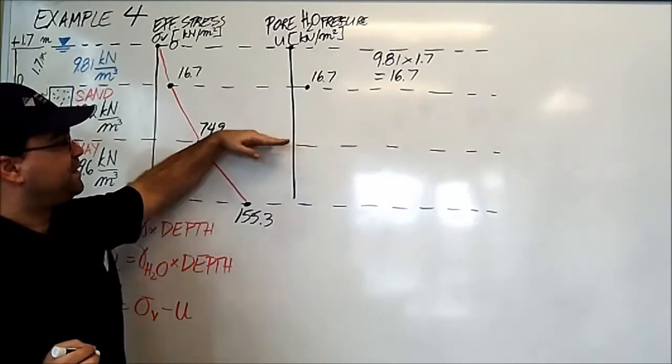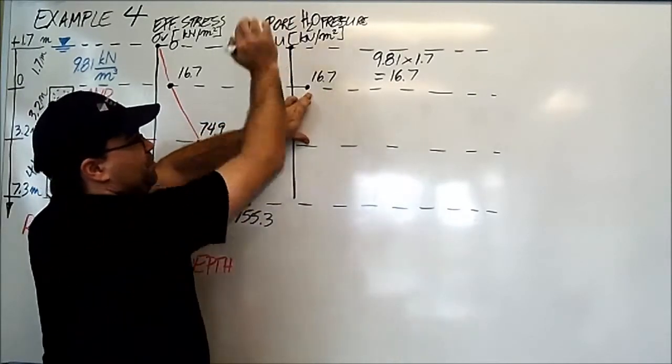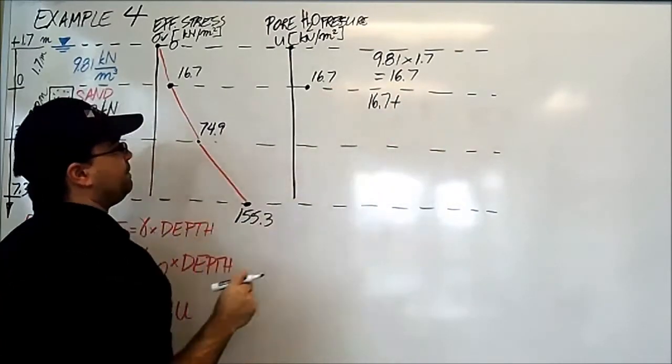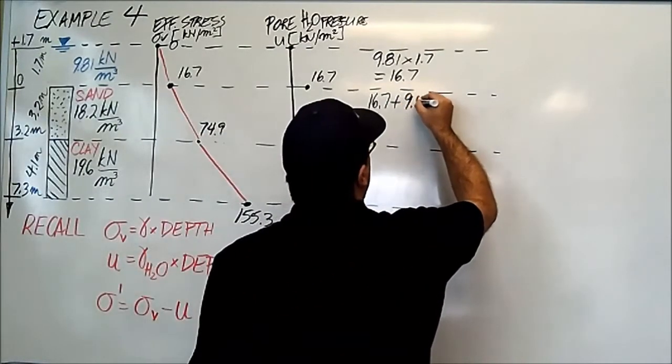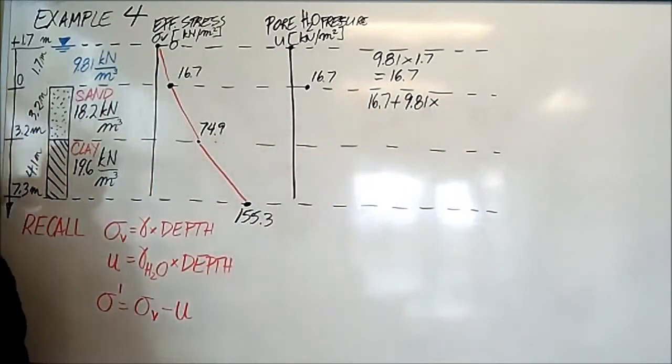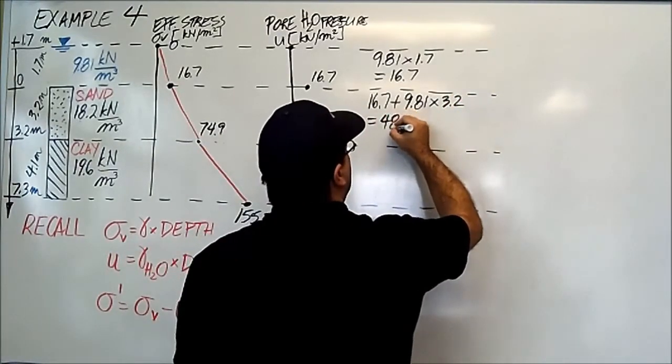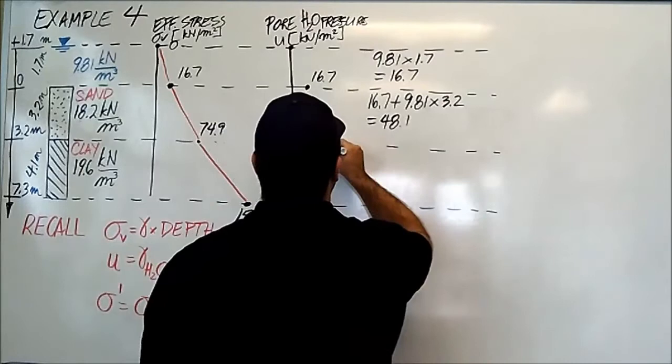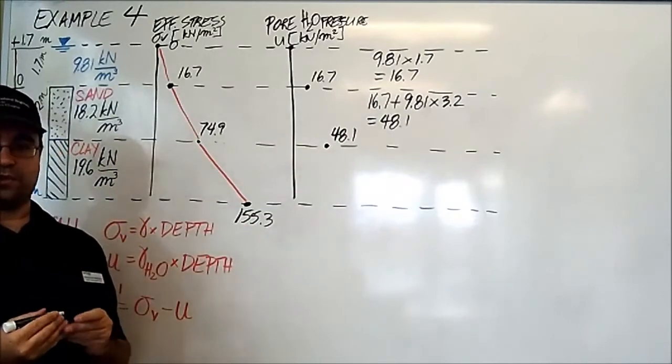Let's move on to the pore pressure at this interface. It is the pore pressure above, 16.7, plus the pore pressure in this chunk, which is, according to this formula, the density of water, 9.81, times this depth, which is 3.2 meters. And this gives us 48.1 kilonewtons per meter squared.